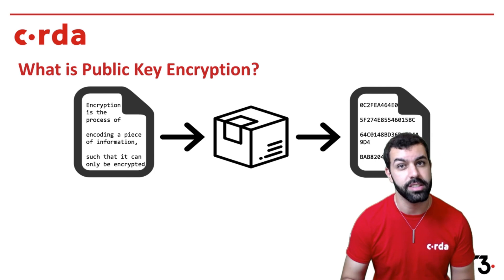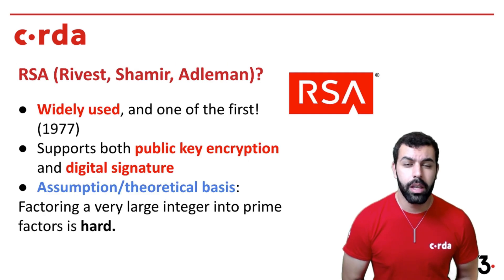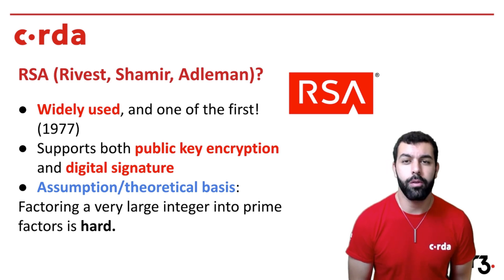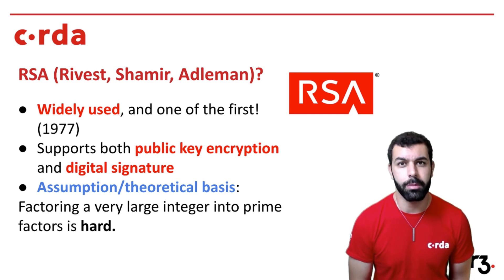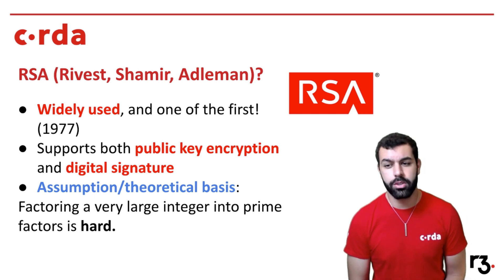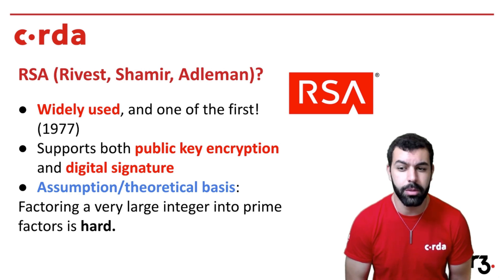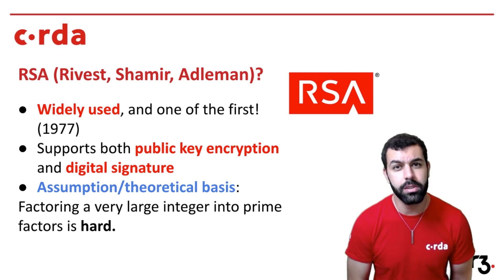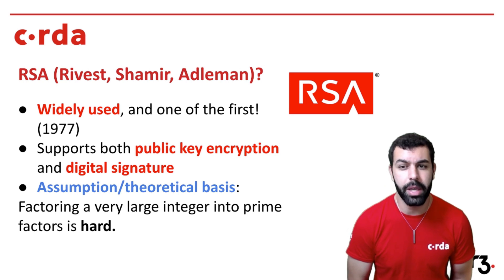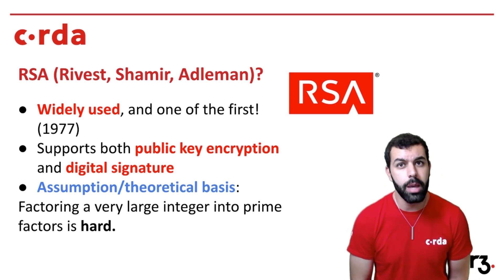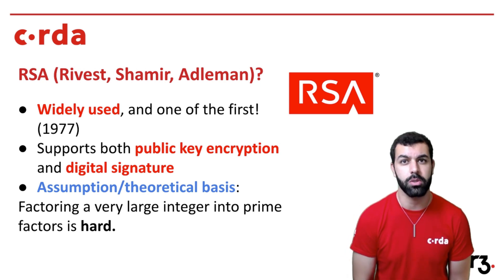You can start to see why the private key becomes very important, and the public key is perfectly safe to share with anyone who wants to send you information. If you've done any digging into encryption, you've probably seen the acronym RSA — short for Rivest, Shamir, and Adelman. These three computer scientists created one of the most foundational and widely used encryption algorithms ever. It supports both public key encryption and digital signatures, and it is built on the assumption that factoring a very large integer into its prime factors is a very hard computational problem.